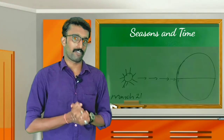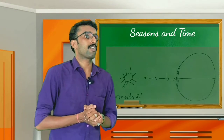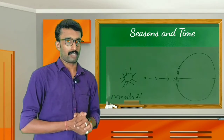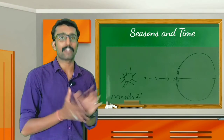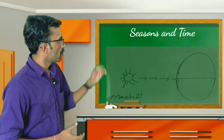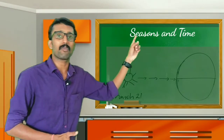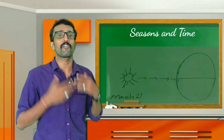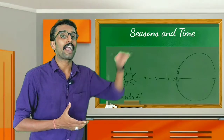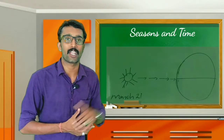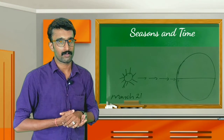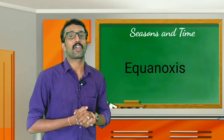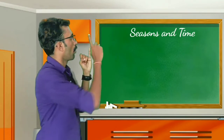The first is March 21st. On March 21st, the sun is located over the equator — that means the sun is in its actual position. So both hemispheres, the northern hemisphere and the southern hemisphere, are receiving equal amounts of sunlight. Therefore, equal day and night are experienced in both hemispheres. This day is known as the equinox.